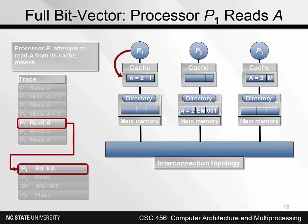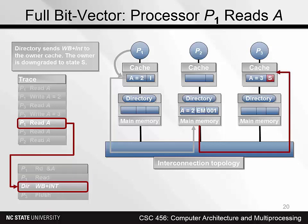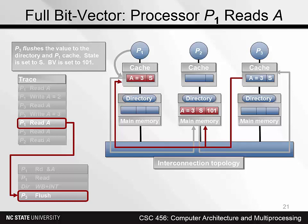P3's write completes, changing the cached value to 3. Now P1 tries to read the value of A from its cache. But since its copy is invalid, it needs to issue a read to the home node. The home node responds by sending a write-back plus intervention to the owning cache at P3, causing it to change state to S. The owning node flushes the block back to the requester and to main memory. The bitvector is set to 101, since both P1 and P3 have up-to-date copies of the block.